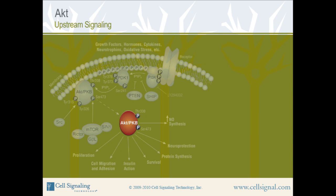Now let's look in more detail at how a signal from a cell membrane receptor leads to the activation of AKT — a process called upstream signaling. Membrane receptors signal through phosphoinositide 3-kinase, which is known as PI3K.